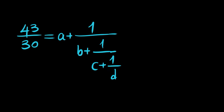Hello everyone, welcome to the channel. We have a nice question today. The fraction 43 divided by 30 is equal to a plus 1 over b plus 1 over c plus 1 over d — a continued fraction. We want to find the integers a, b, c, d that satisfy this.